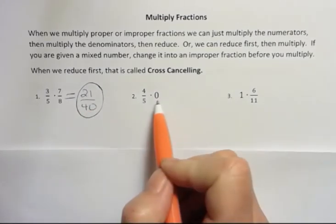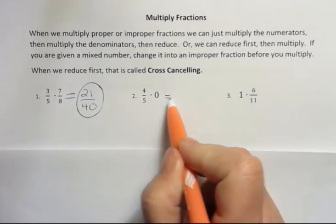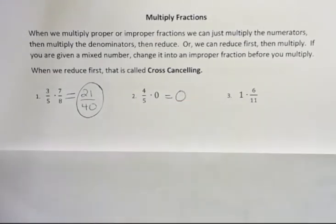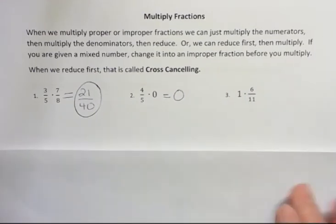Anytime you multiply by 0, you get 0. Whether the 0 comes first or second, whether you're dealing with a whole number or a fraction, you always get 0.